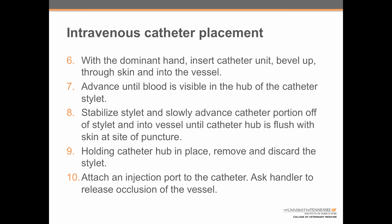Advance the catheter unit until blood is visible in the hub of the catheter stylet. As soon as that happens, stabilize the stylet and slowly advance the catheter portion off and into the vessel until the catheter hub is flush with the skin at the site of puncture. Holding the catheter hub in place with one finger of the non-dominant hand, remove and discard the stylet. Step 10: attach an injection port to the catheter to seal the opening and prevent blood from escaping, and at the same time ask the handler to release occlusion of the vessel.